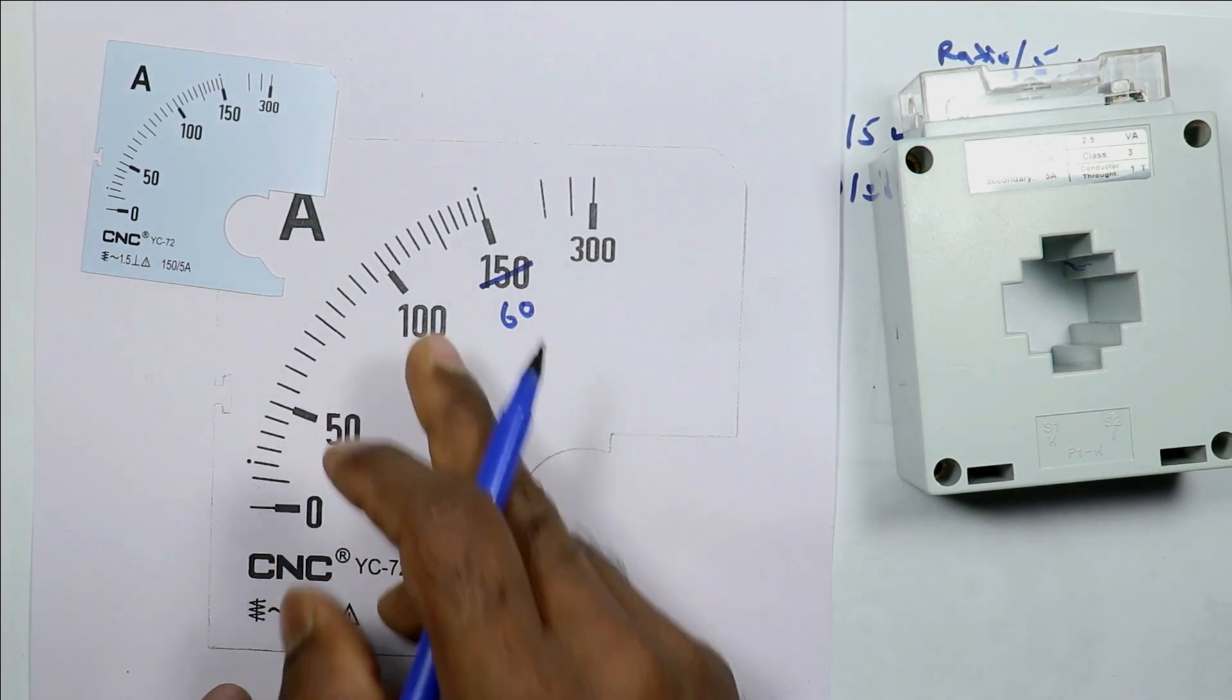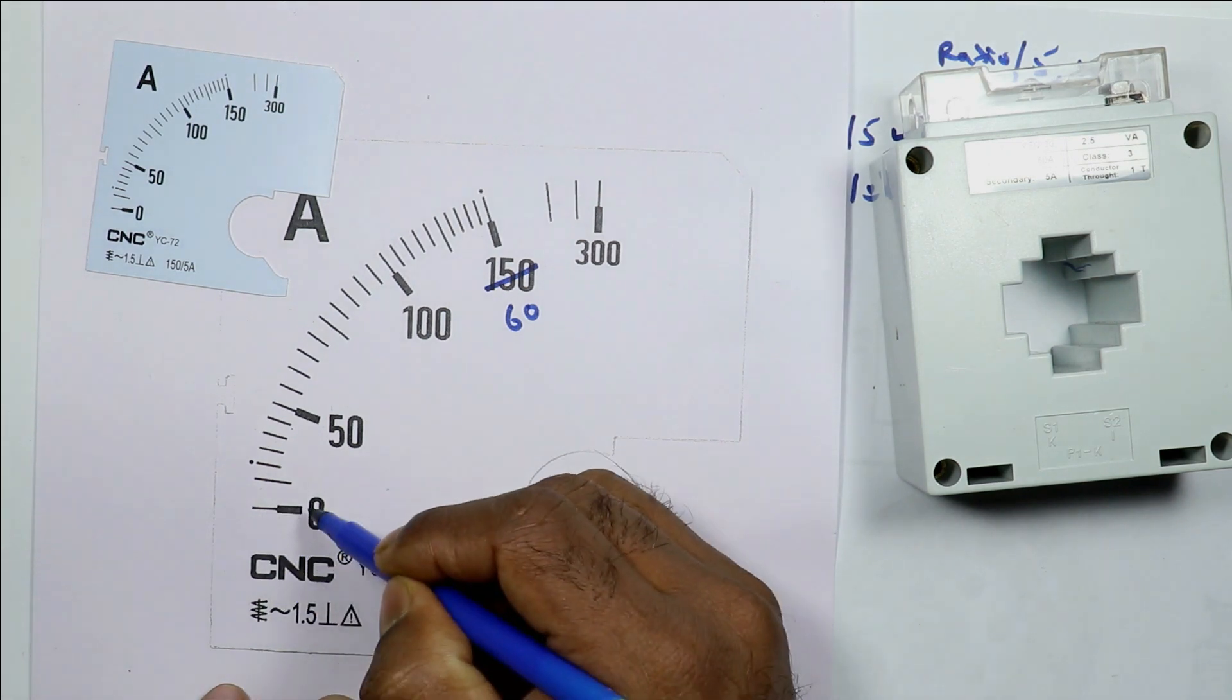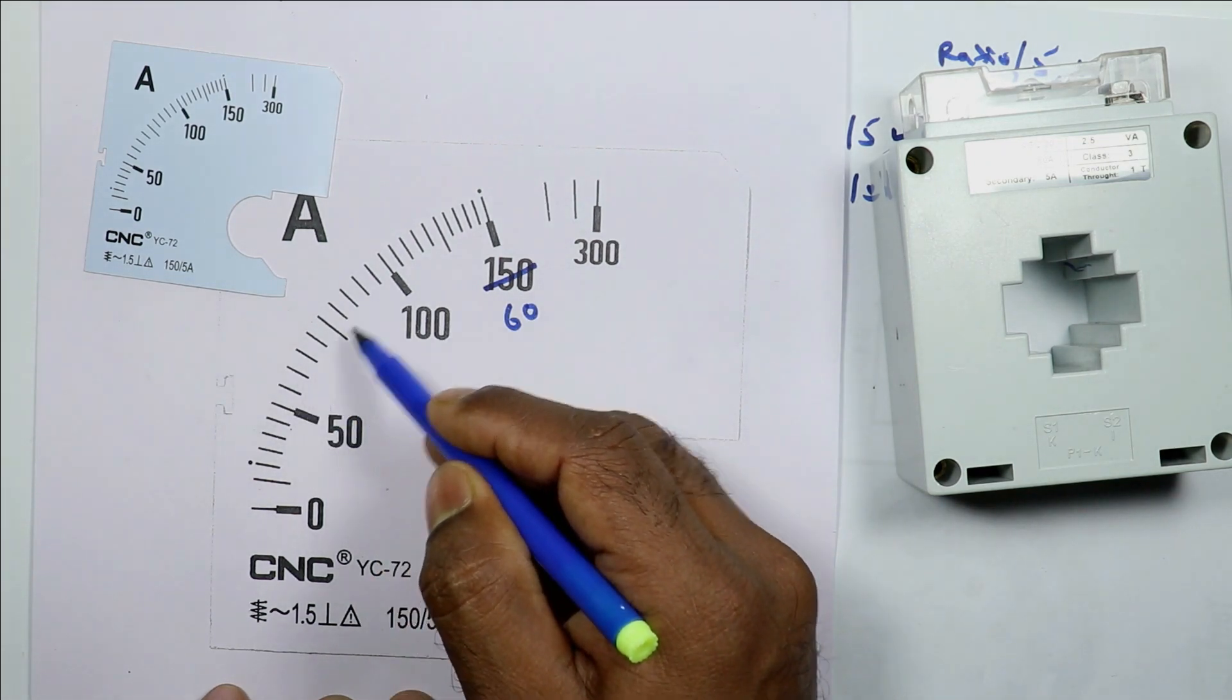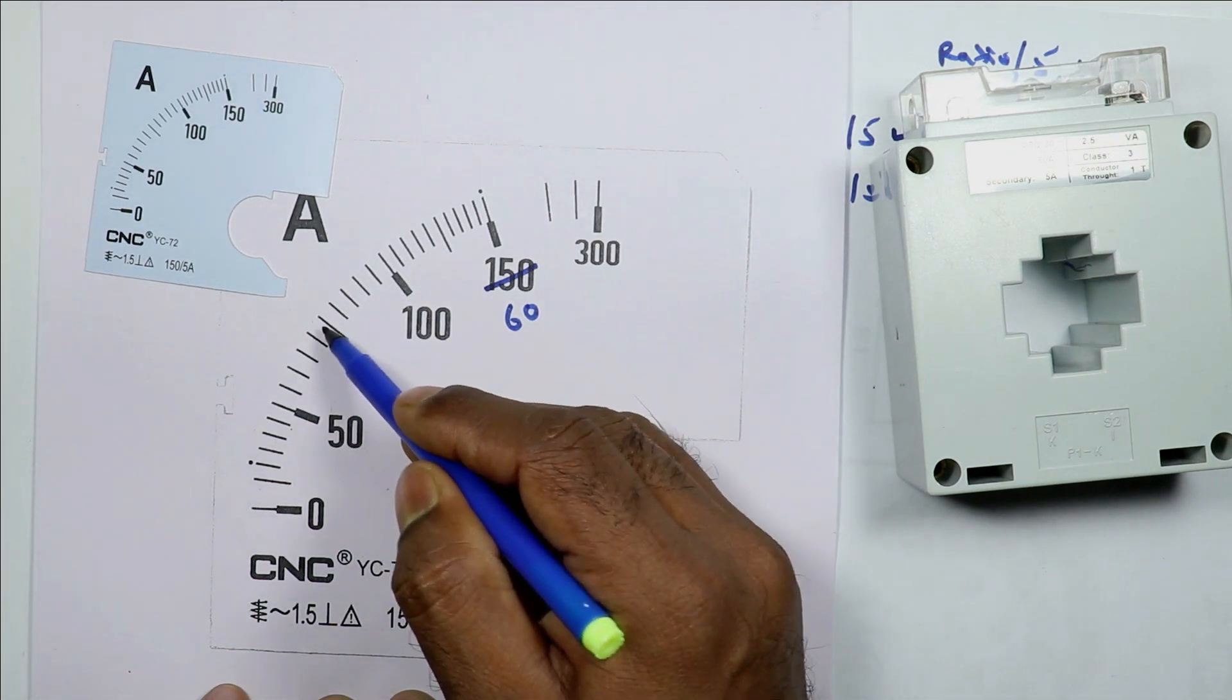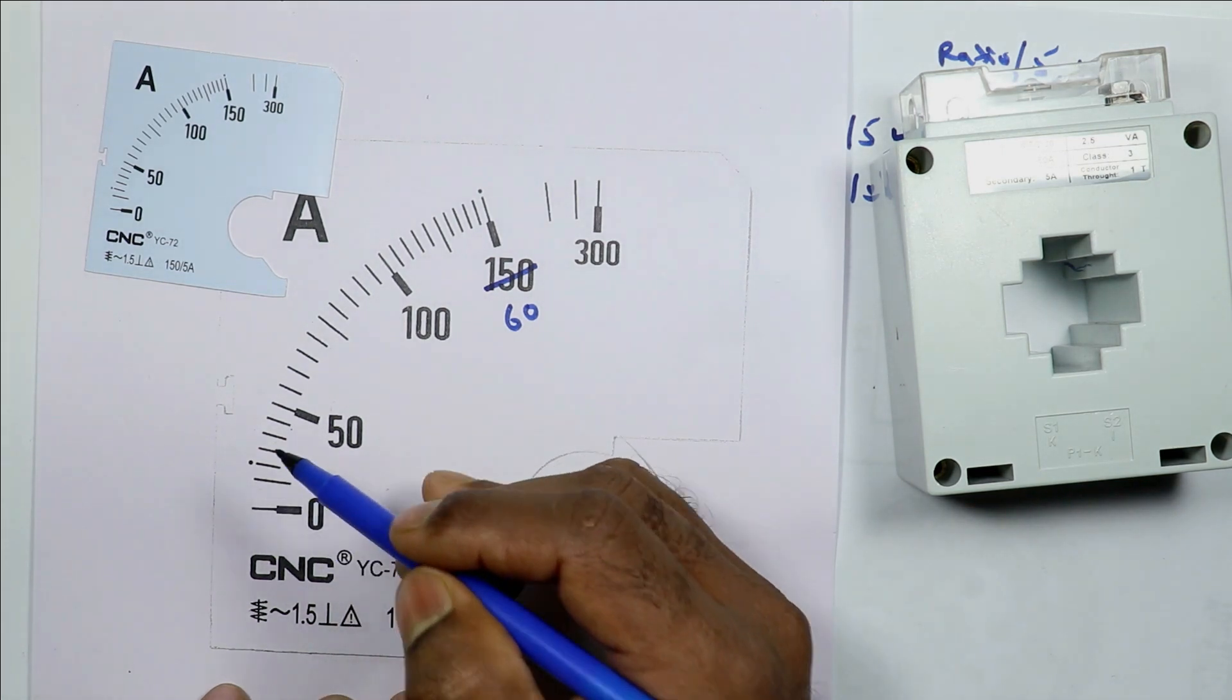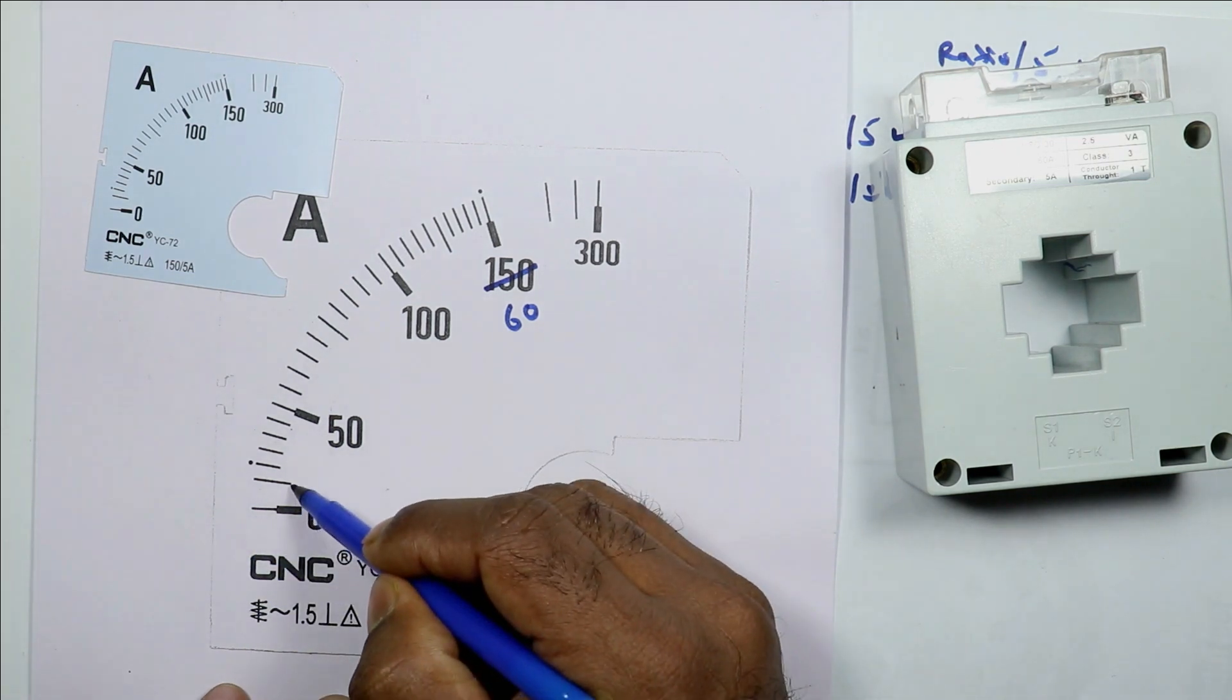First of all count the lines. How many are there? Three types of lines are present here: the bigger one, medium and small one. The medium lines are at 5 counting. At every 5 count a medium line is present. At the starting only one medium line is there, so we will consider this as 5th. Before this 4 lines were there. So this is 5.